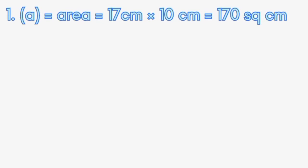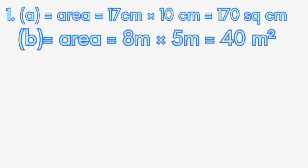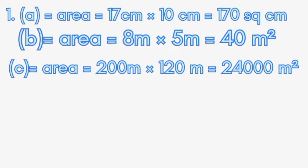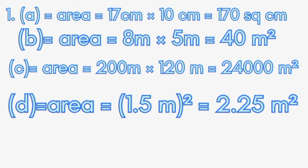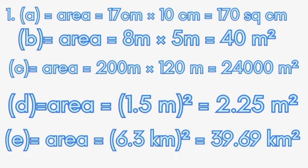For Q1, just multiply the dimensions. 17 × 10 = 170; 17 × 8 = 40 (wall). For the field: 200 × 120 = 24,000. For the square board: 1.5 squared = 2.25. For the square lawn: 6.3 squared = 39.69.